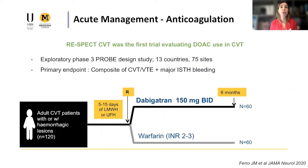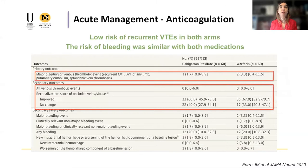When the patient is stable, we want to switch to oral anticoagulation. Although vitamin K antagonists have been the main choice for decades and can still be used, there is recent evidence on the use of DOACs, particularly dabigatran. The RESPECT-CVT trial was the first trial assessing the use of DOACs in patients with CVT. 120 patients were randomized to receive warfarin or dabigatran 5 to 15 days after starting treatment with low molecular weight heparin or unfractionated heparin. The results are quite reassuring: these patients also have a low risk of recurrent venous thrombotic events and a low risk of bleeding. This is something to consider in patients without a contraindication to DOACs.